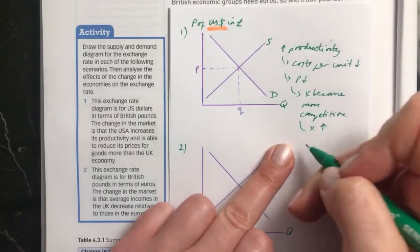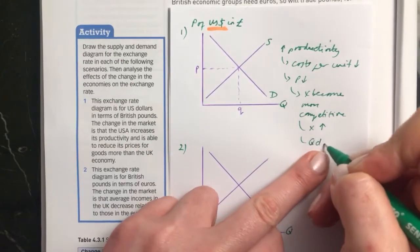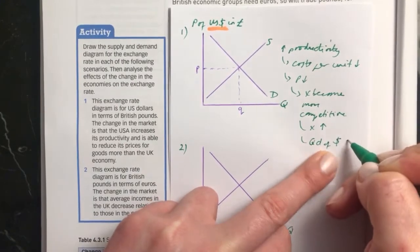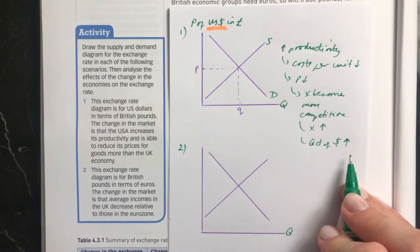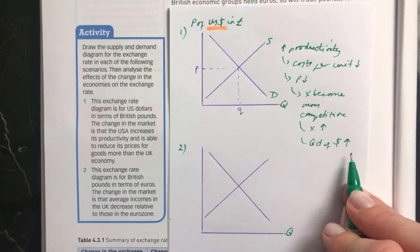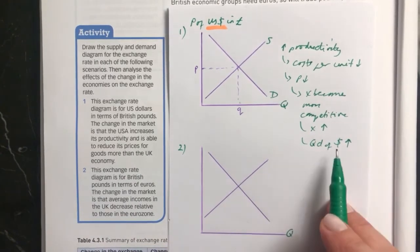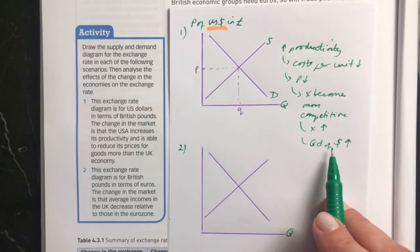If your exports go up, this means that the quantity demanded of dollars will go up. Because in order to buy the US products, people have to have dollars. So people who have pounds, if they want to buy these much cheaper US goods now, they're going to have to exchange their pounds for dollars.